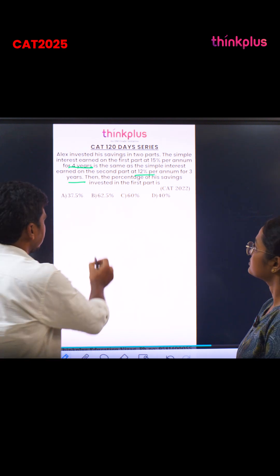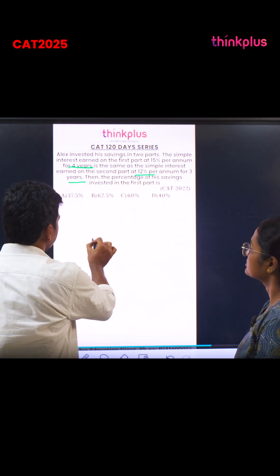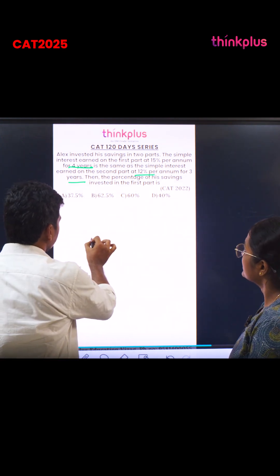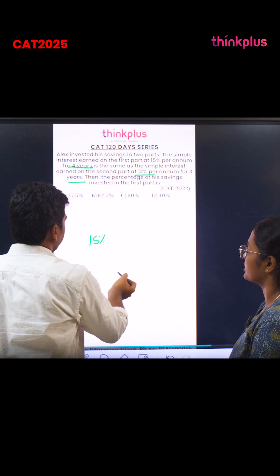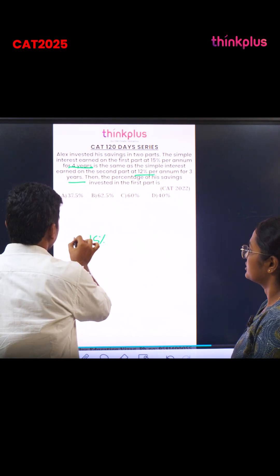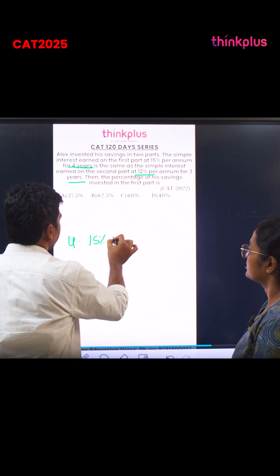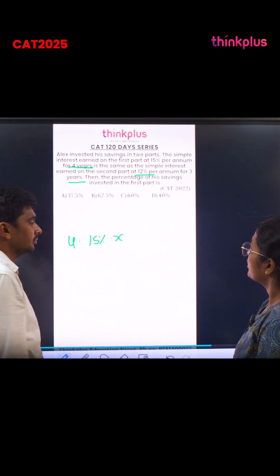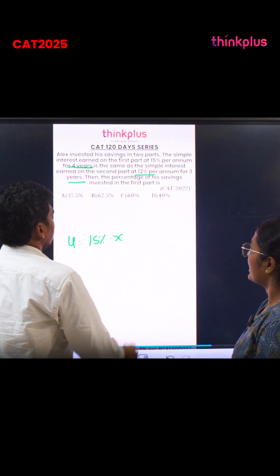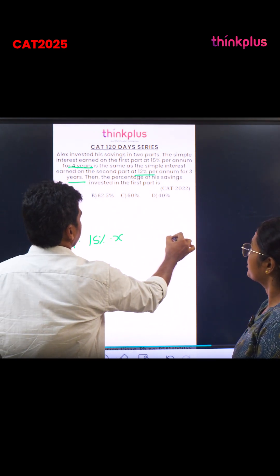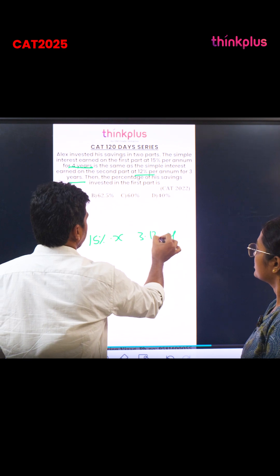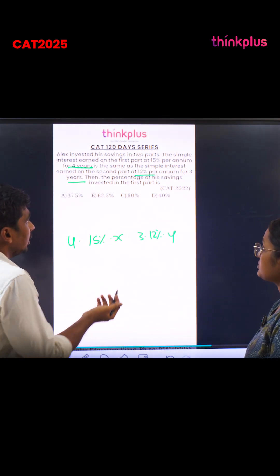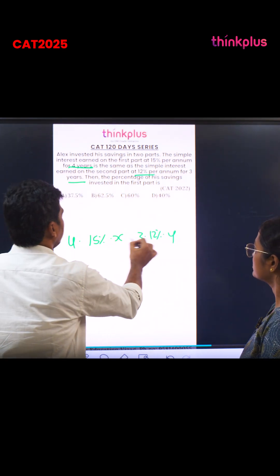Two parts. First part: 15% for four years. Can I take the first part as X? Yes. And what about the second part? Y, at 12% for three years. So 3 × 12% of Y. And it is given that both are equal.